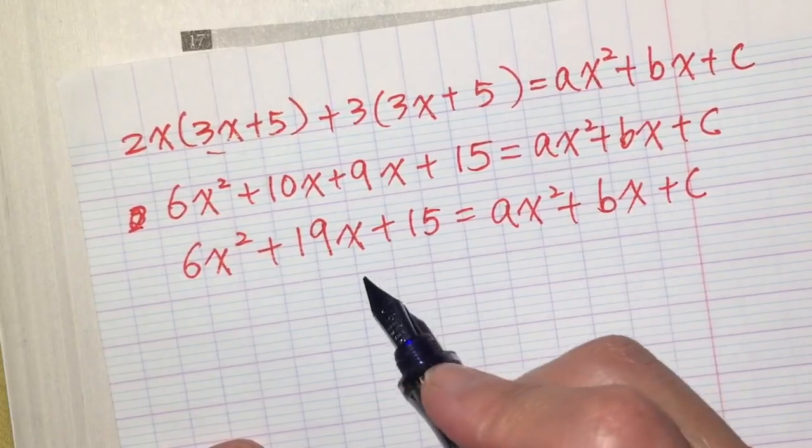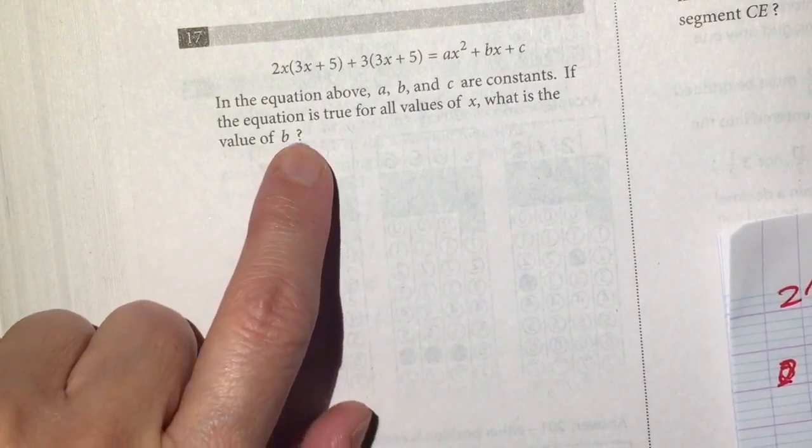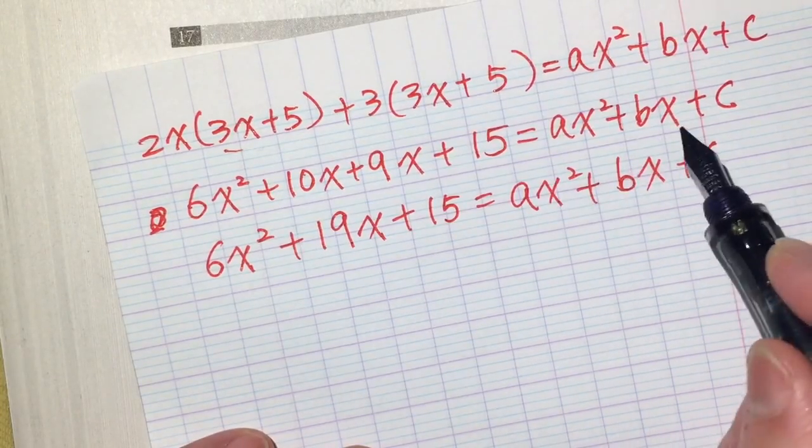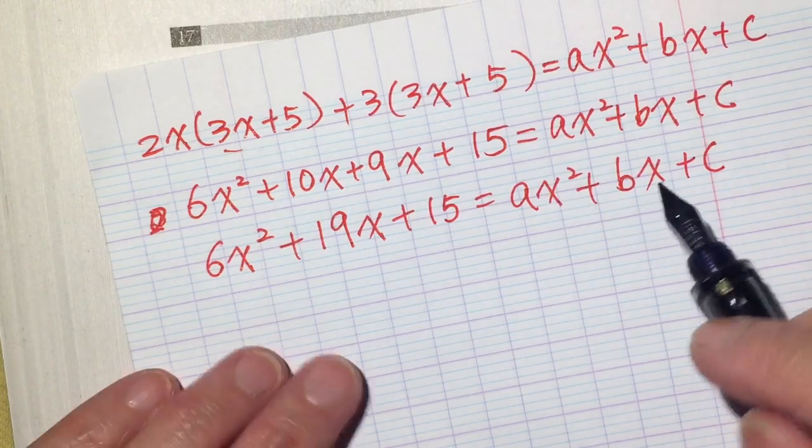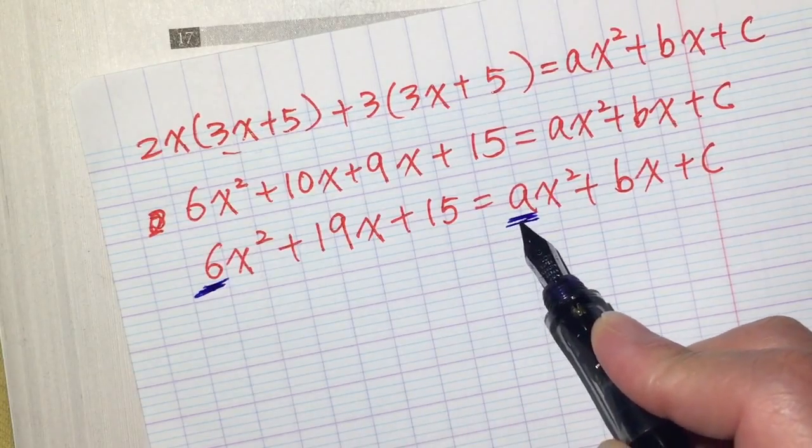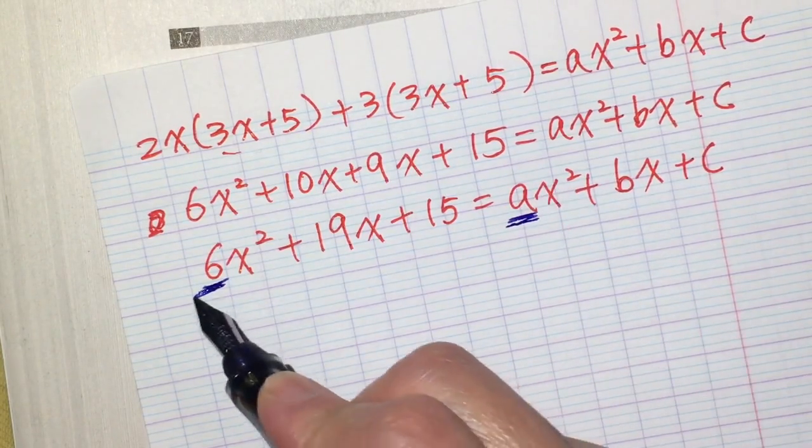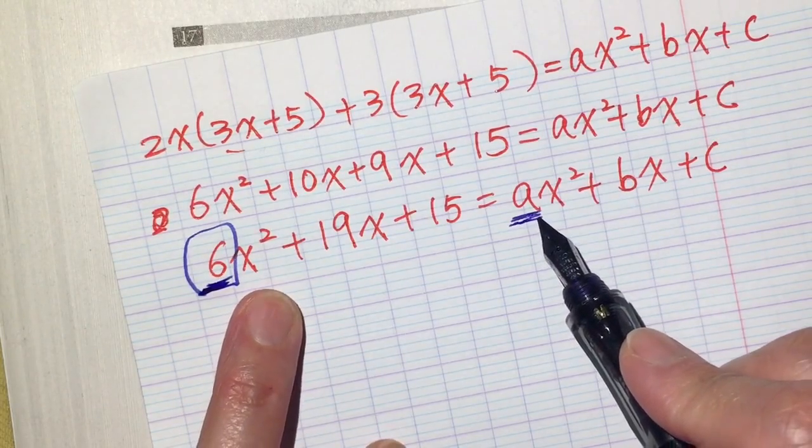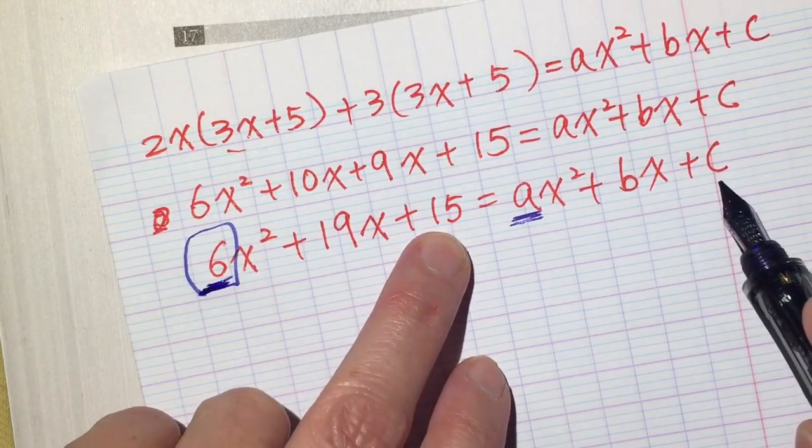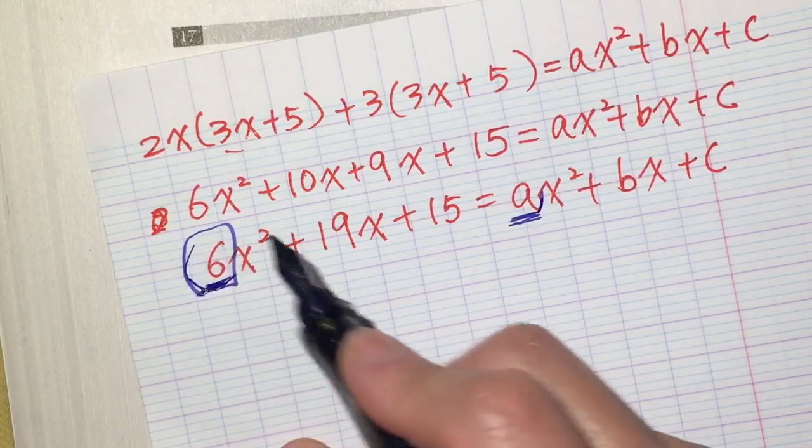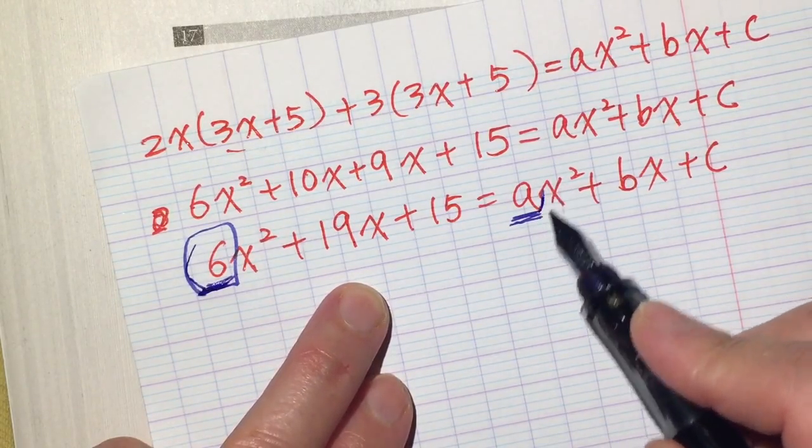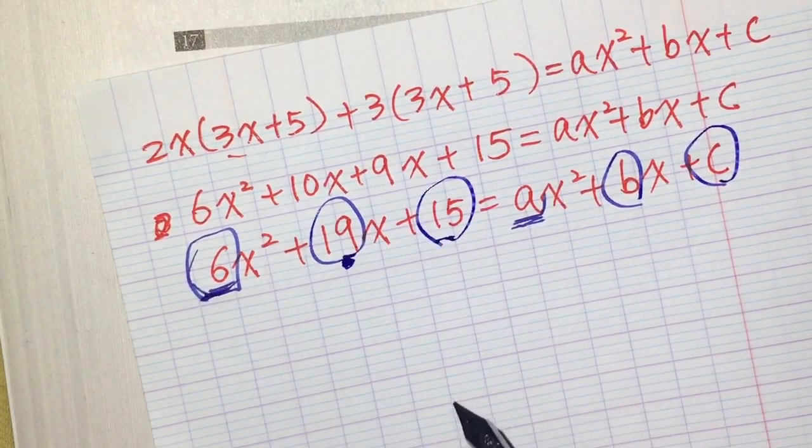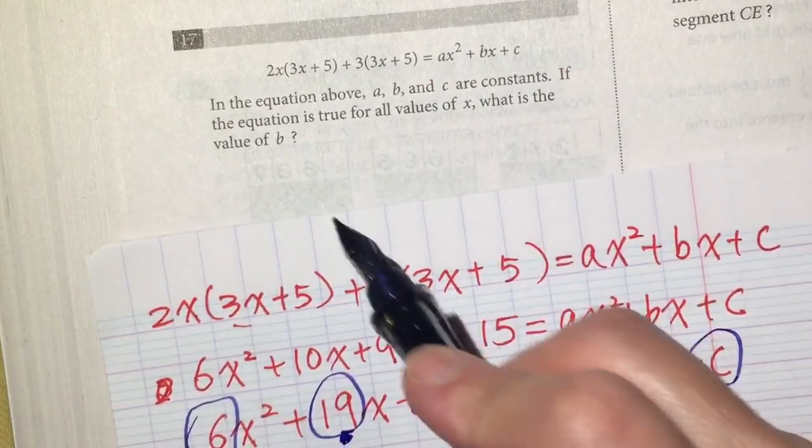So if the equation is true for all values of x, what is the value of b? If this question is true for all values, no matter what x value is, it exists, it must be equal, so the constant, the coefficient of x squared must be the same as the coefficient on the left side. We have the like atoms. x to the 2 degree, 1 degree x, 0 degree x. So this should be the same as this, 2 degrees x squared, and x should be the same as this coefficient. And c should be the same as 15.